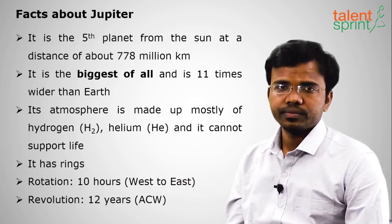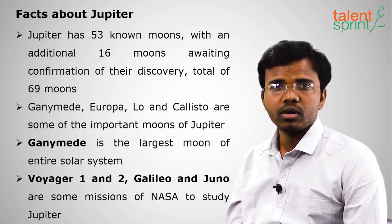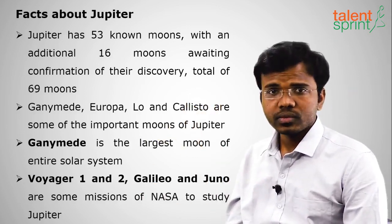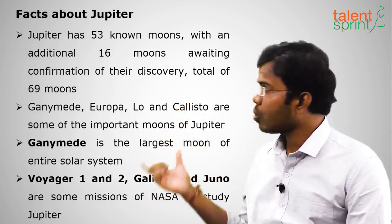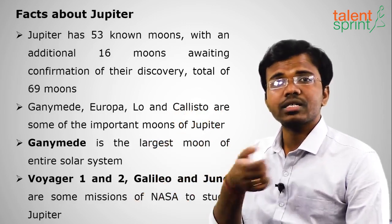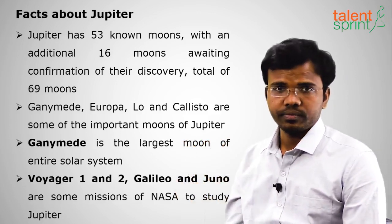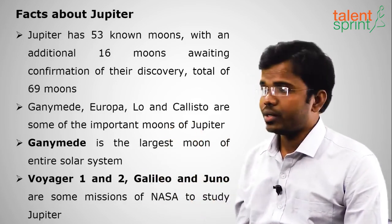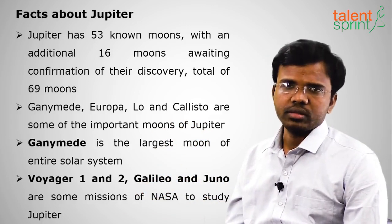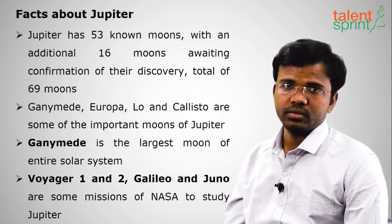Jupiter's revolution period is 12 years in the anti-clockwise direction. Jupiter currently has 69 moons — 53 have been discovered and named, while 16 are yet to be named. Its famous moons include Ganymede, Europa, Io, and Callisto. Ganymede is the largest moon of Jupiter and also the largest moon in the entire solar system. Voyager 1 and 2, Galileo, and Juno are NASA missions sent to study Jupiter.